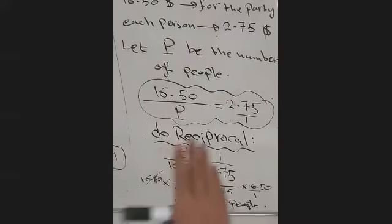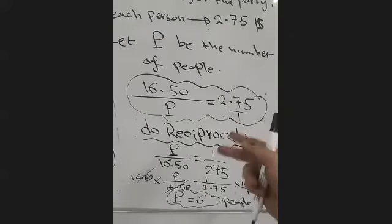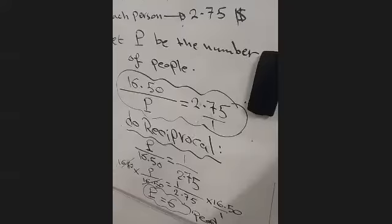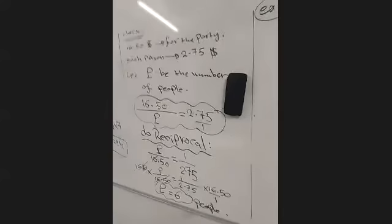When the variable is down, do reciprocal on both sides first, then continue normally. Copy the check please.